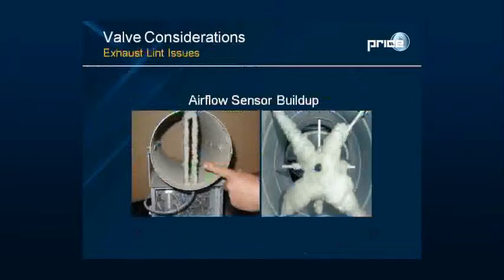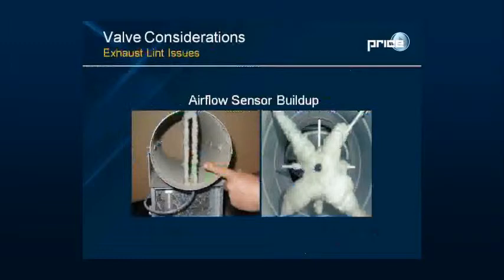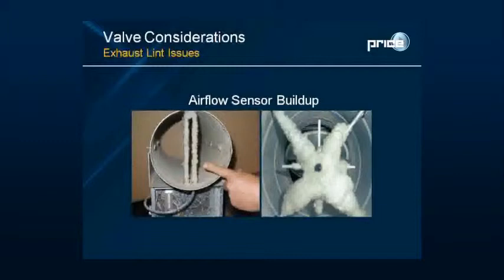Another issue with conventional VAV boxes is potential buildup on cross-flow sensors. In return or exhaust applications such as isolation rooms and operating rooms, there is a high concentration of airborne lint from frequent linen changes. This lint can accumulate on cross-flow sensors and interfere with the velocity pressure signal. The Venturi valve avoids this issue entirely because it does not use an airflow sensor to control flow.